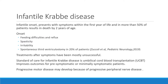Treatments after symptoms have been mostly unsuccessful. However, the current standard of care for infantile Krabbe — if diagnosed before symptoms — is umbilical cord blood transplantation. Cord blood is used because it is rapidly accessible and this disease progresses extremely fast. The stem cells from umbilical cord blood can improve outcomes for pre-symptomatic and minimally symptomatic patients.